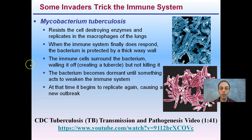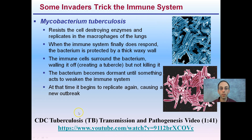The bacterium becomes dormant until something acts to weaken the immune system — it can kind of stay there and hang out for a while. When the immune system becomes compromised, that's when it will start to replicate again, causing a new outbreak. This is why people typically need tuberculosis screenings, to determine whether they're carrying this pathogen, which can easily be hidden but show itself during times of stress. There's also a short CDC video on tuberculosis transmission linked in the description.